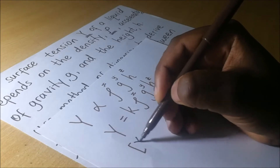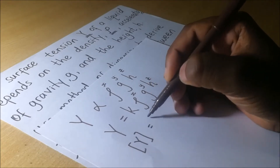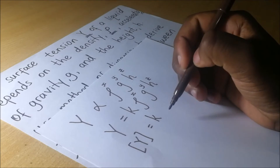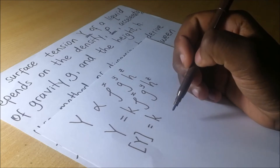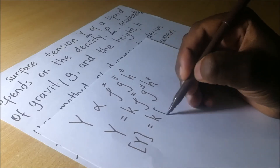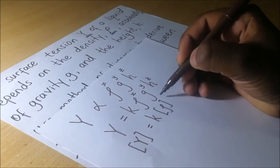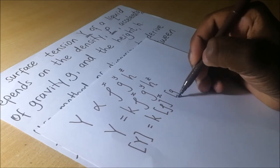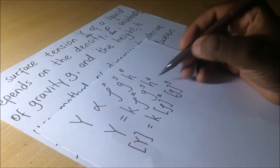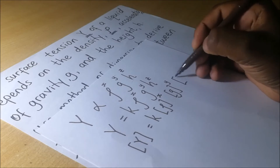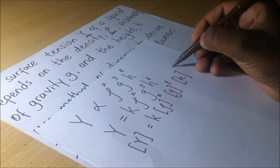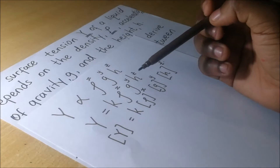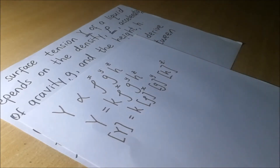Since constants do not have dimensions, we leave K as that. We then multiply by the dimensions of density to the power X, the dimensions of gravity to the power Y, and the dimensions of height to the power Z. Let's find the dimensions of each parameter one by one.